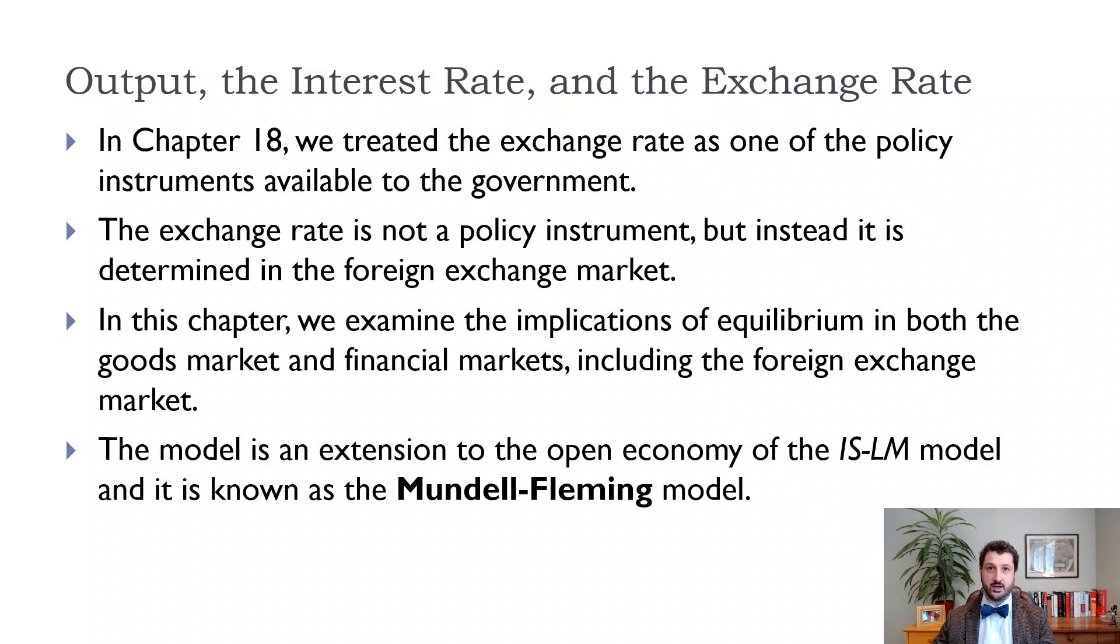This is where we ended in Chapter 18, which is our equilibrium in the goods market. We start with C plus I plus G as domestic demand, we take out imports adjusting for the exchange rate, and then we add in exports. Recall that imports depend on our own GDP and income and the exchange rate.